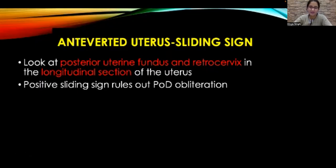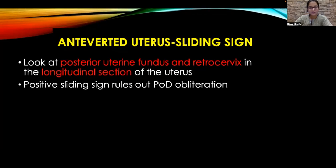Hello. I'm sharing a short presentation on how to assess the sliding sign in an anteverted uterus. In an anteverted uterus, when we push upon the uterus with a transvaginal probe, we look for the free sliding of the bowel loops past the posterior uterine fundus and the retrocervical region in a longitudinal section of the uterus. A positive sliding sign rules out obliteration of the pouch of Douglas.